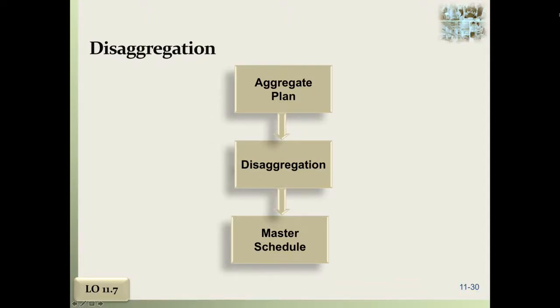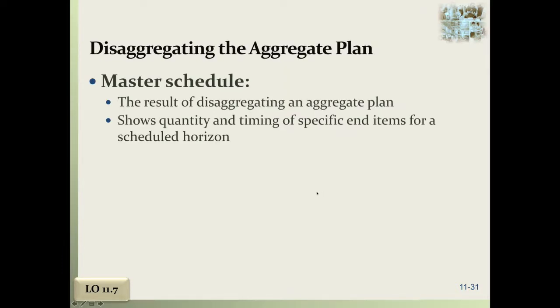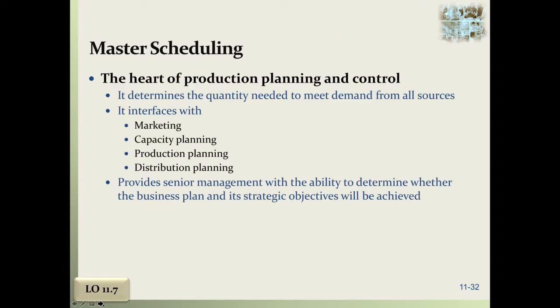The last section we're going to talk about is disaggregation and the master schedule. This is when you're getting down to what you're going to work on each day with the resources that you have. The aggregate plan gets broken down into the master schedule, which shows the quantity and the timing of specific end items for a schedule horizon. We're starting to look at what you're really going to be making.